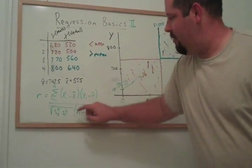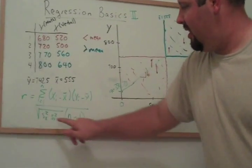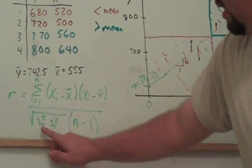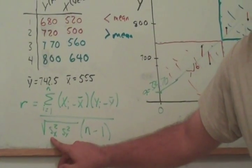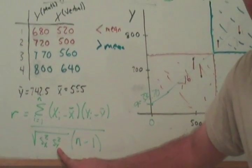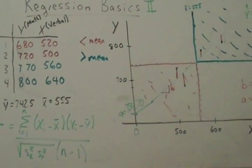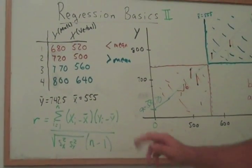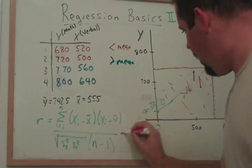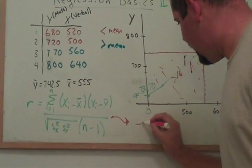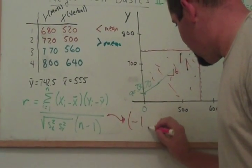I've neglected to mention these bits down here. This is just the sample variance of x, this is the sample variance of y, and this is the sample size minus 1. But the whole point of this down here is so that r is somewhere between negative 1 and 1.